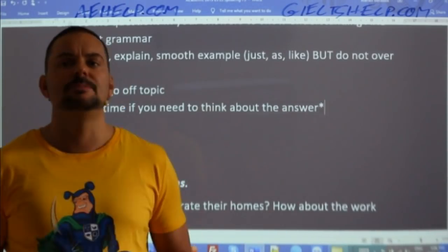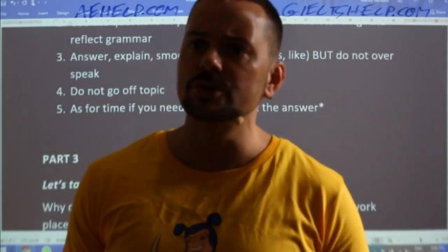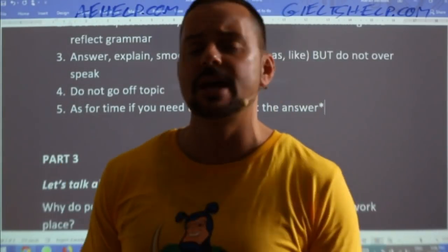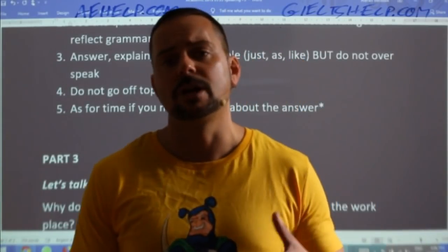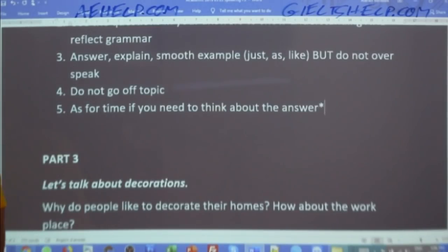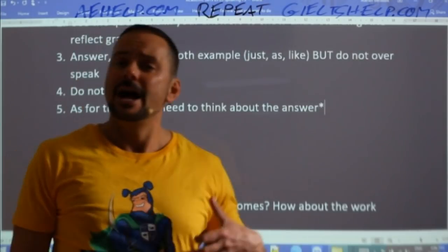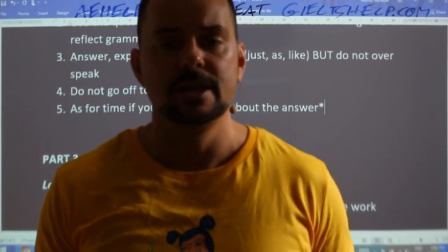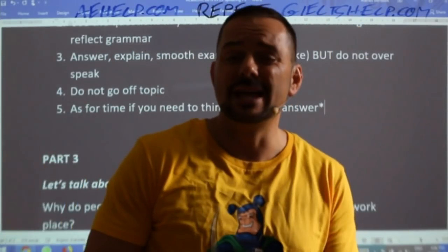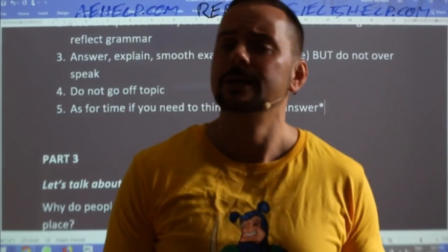One important tip is to buy time. Some Part 3 questions are a little bit difficult, even in your own language. So ask for time if you have to. Say: 'That's an interesting question, please give me a moment to think of a good answer,' or 'I've never thought about that before, can I just have a moment?' Don't use this for every question, but if you get an unusual question, buy some time.